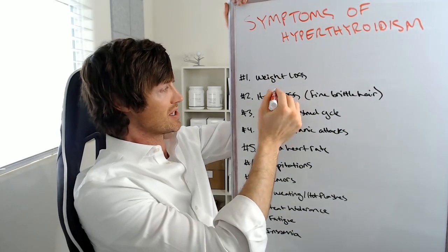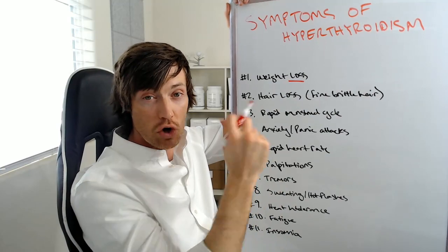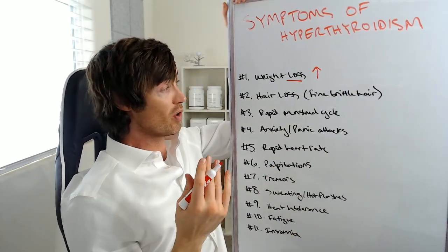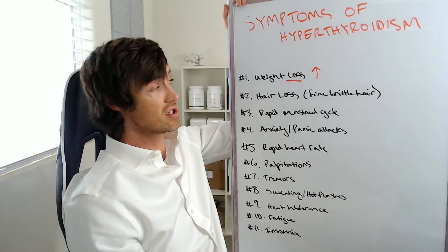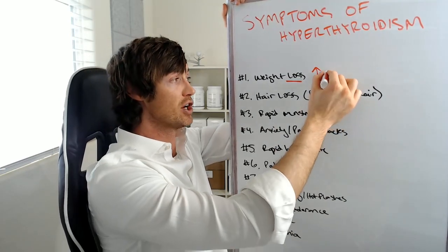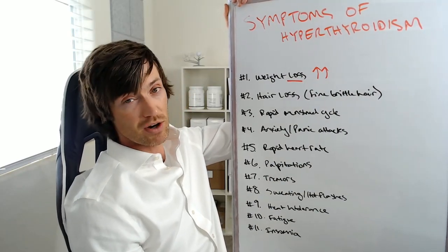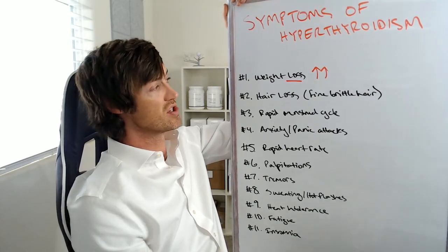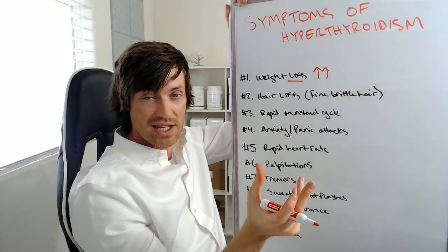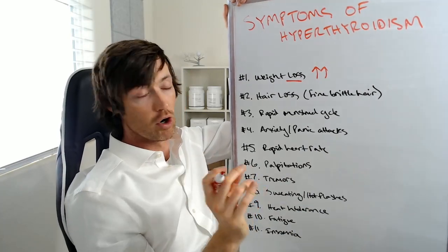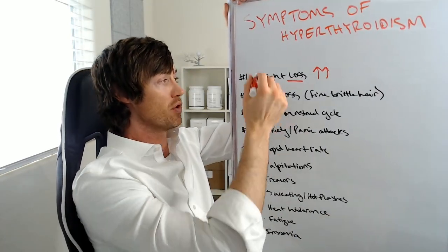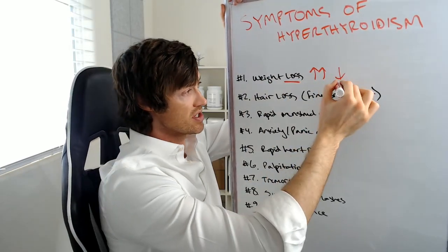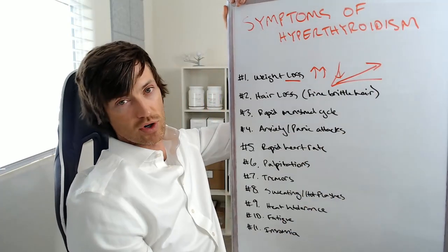The first symptom is weight loss. If your thyroid is turned on and revved up, it's going to increase your metabolism. You're going to burn more calories and naturally lose weight without doing anything — it doesn't matter how much you eat. In fact, a lot of these people increase their diet tremendously and still lose weight. But the problem is it's not all good, because you're also going to be losing muscle mass. Your body is going to be catabolizing anything it can to produce and burn energy. If your thyroid was low, you'd experience weight gain — the exact opposite.